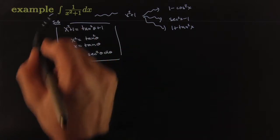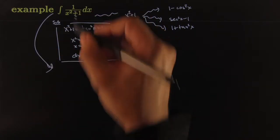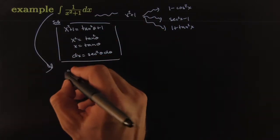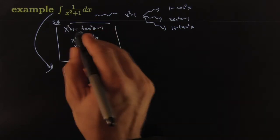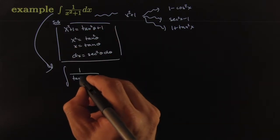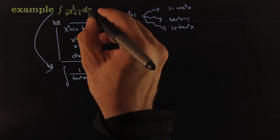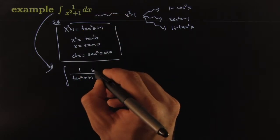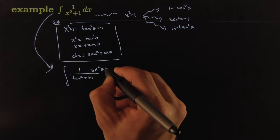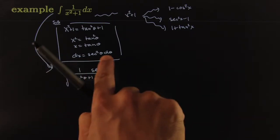And then you substitute your dictionary items into the original integral, and that would become integral of 1 over x squared plus 1, which would become tangent squared theta plus 1, dx, which would become secant squared theta d theta. That's my dx right here.